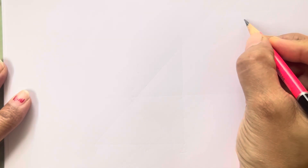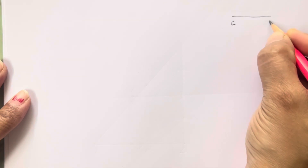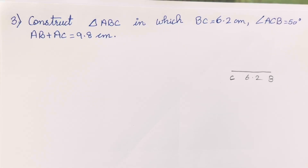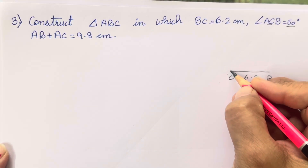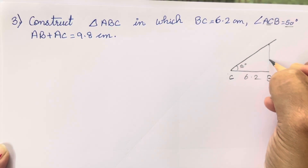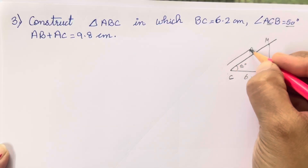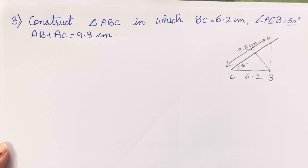Let's move on to the third one: triangle ABC. BC is 6.2 cm, so we will mark 6.2 as BC — C over here, B over here. Angle B is 50 degrees, and we will mark point M on the extended ray. AB plus AC is 9.8 centimeters. So the extended line from B through M is going to be 9.8 cm. The steps are the same as for the second question.